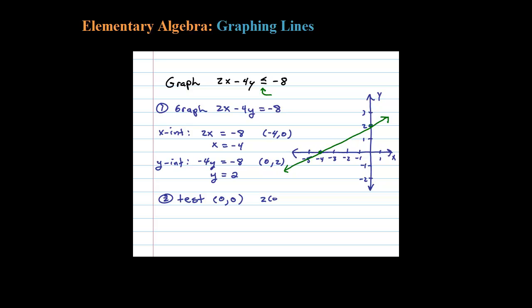So let's plug that in: 2 times 0 minus 4 times 0. The question is, is that going to be less than negative 8? Well, the left side comes out to 0. Is 0 less than negative 8? No, zero is greater than negative 8, so that's actually a false statement.